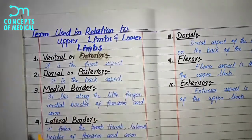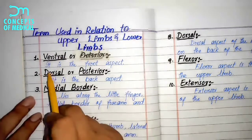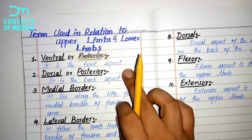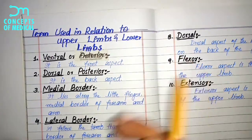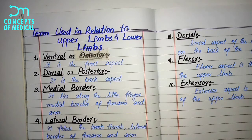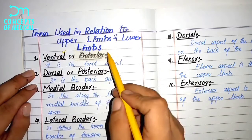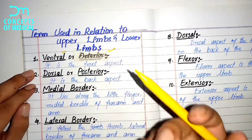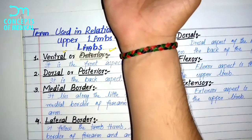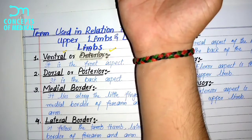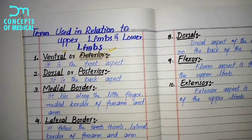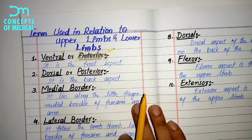The first term is ventral or anterior. This describes the front aspect of the upper and lower limbs. If we are standing in anatomical position, any structure at the front side of the upper limbs or lower limbs uses these two terms. For example, there are a lot of muscles in our hand at the anterior side of our forearm, so these terms are used for the front aspect of the forearm.